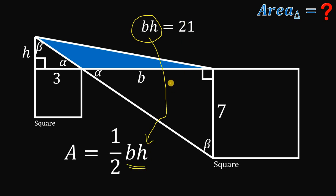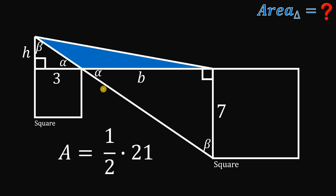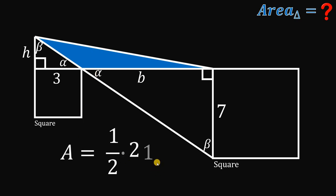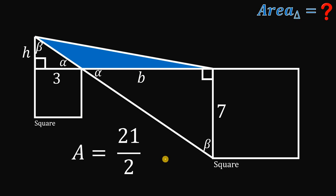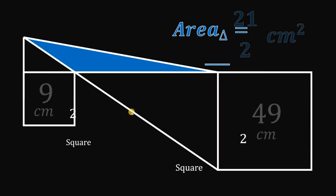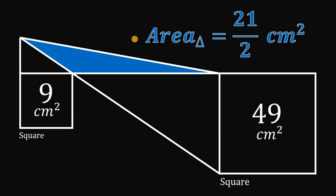If we cross-multiply, we get B times H equals 3 times 7, which is 21. We know the value of BH is 21, so we can substitute: the area of this triangle equals one-half times 21, which is 21 over 2 square centimeters. Therefore, the area of this triangle is equal to 21/2 or 10.5 square centimeters. And as always, we are done.